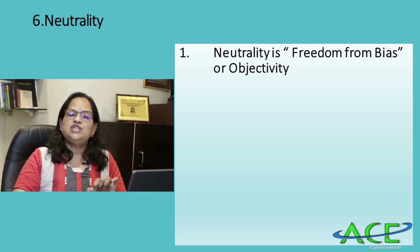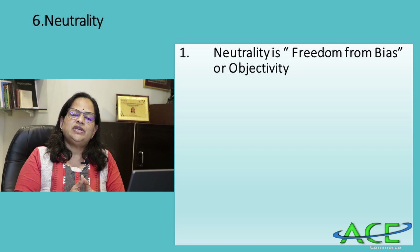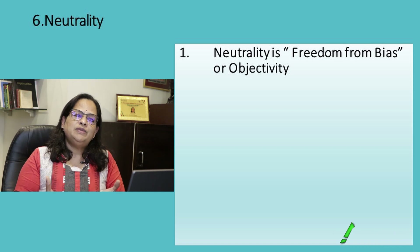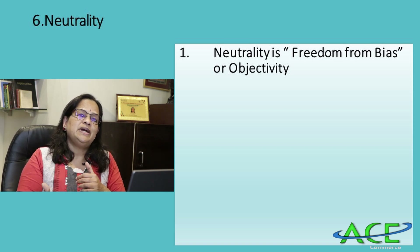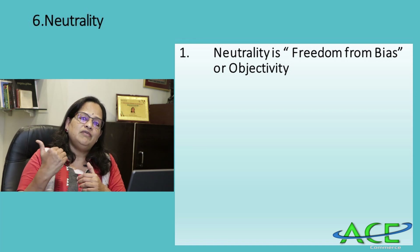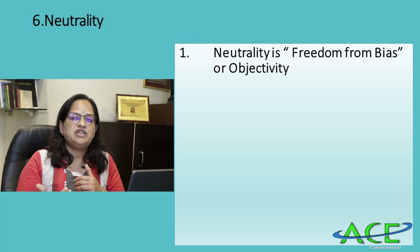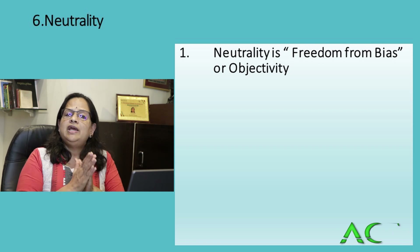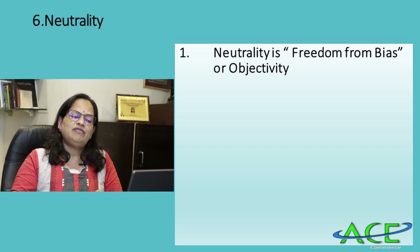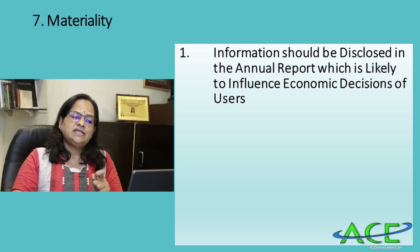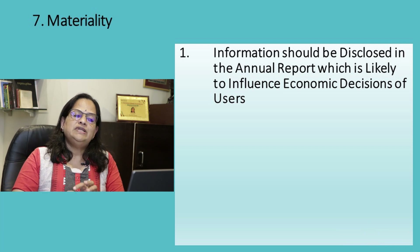Neutrality means freedom from bias or objectivity. If owners bribe an auditor or employees to fabricate financial statements different from the actual position, those statements are biased — prepared for the convenience of the owner or to obtain a loan from a financial institution. Such biased information is not allowed and is punishable. The actual position must be represented through financial statements.